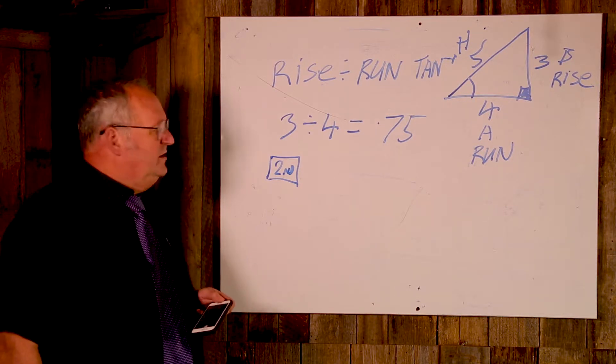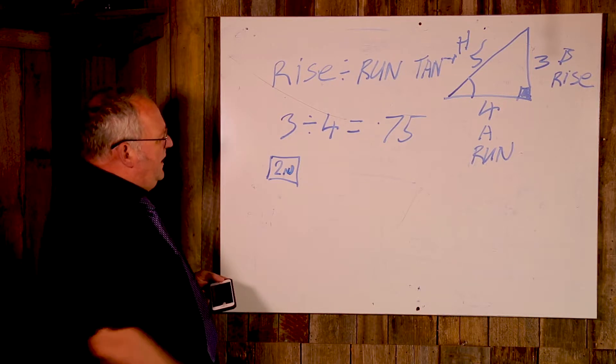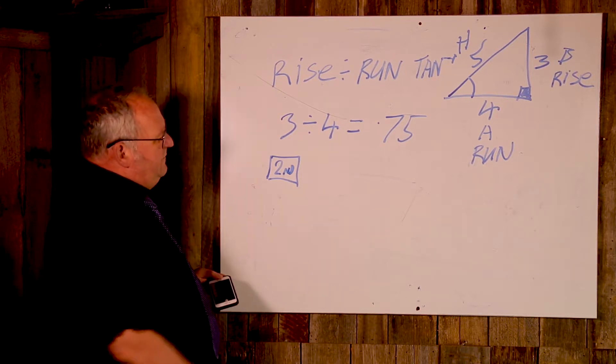So we've 0.75 displaying. I press second function and then I look for tan and it's got a little negative one up there. Press that...